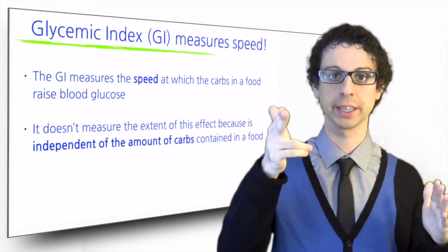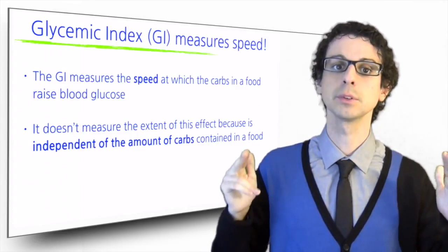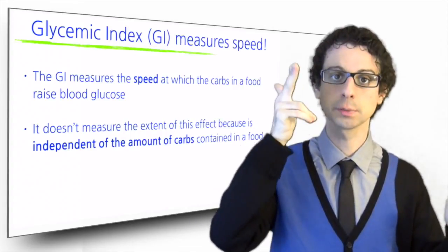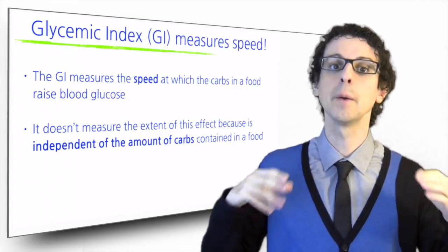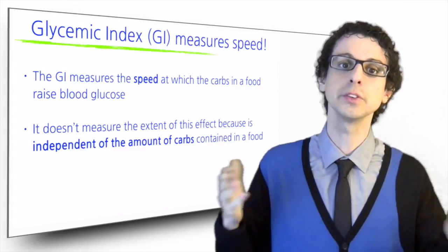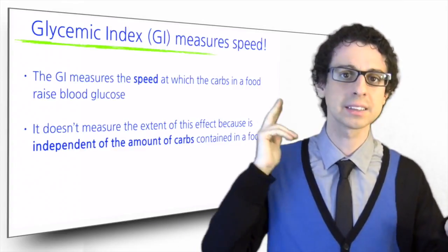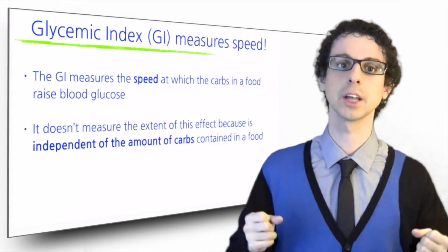Think of a man target shooting with a gun. The glycemic index would tell us how fast he shoots his bullets, but it does not tell us how many bullets he has to shoot. If he only has a few bullets, he can shoot them as fast as he wants, but it will still not be very deadly.